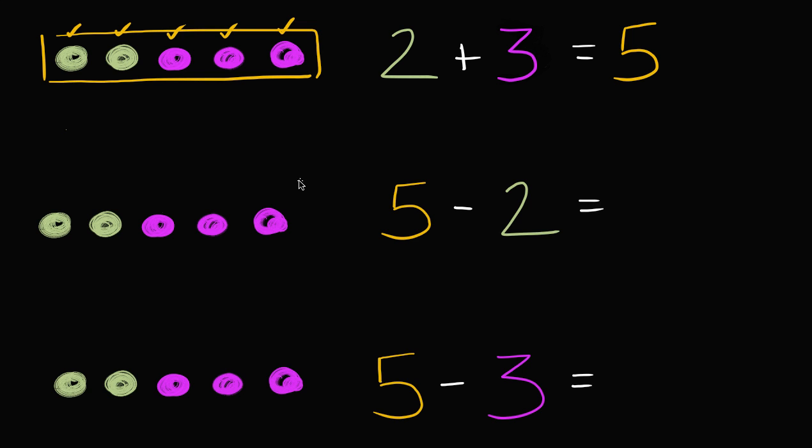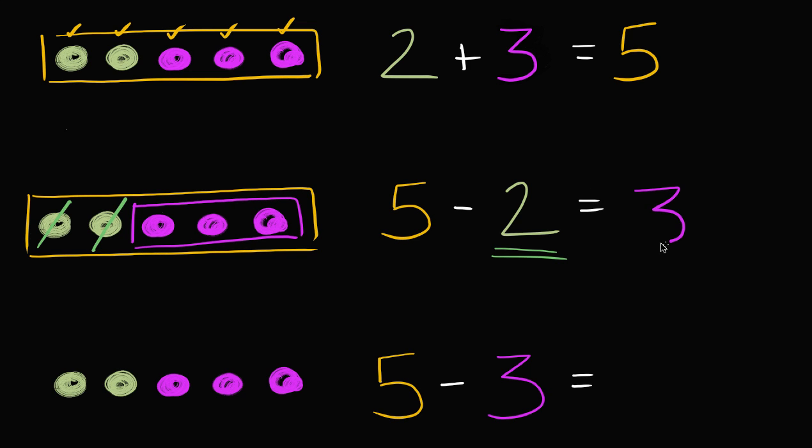Now, what if we did something a little different? Let's start with the five balls. You can count them again: one, two, three, four, five. And now let's take away two, let's subtract two of these balls. So let's take away one and two. Well then, what are we left with? We are left with three balls.